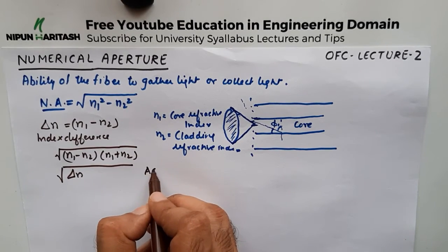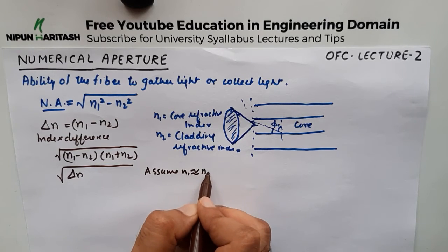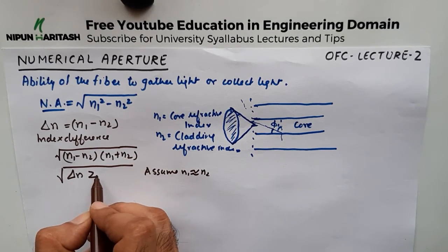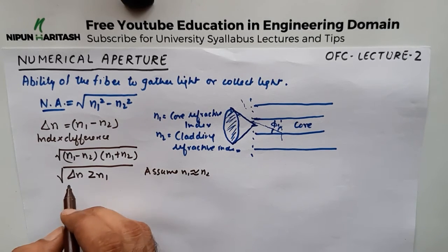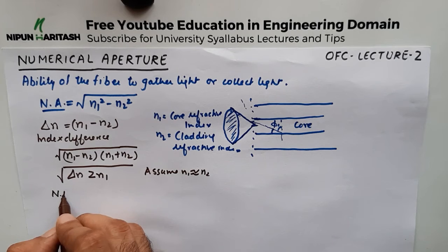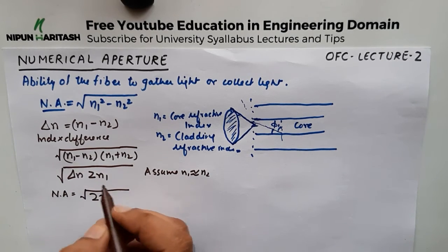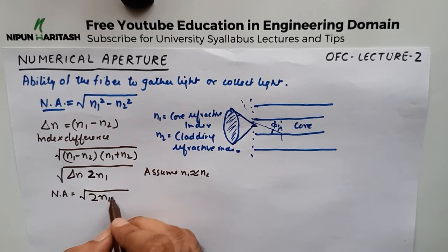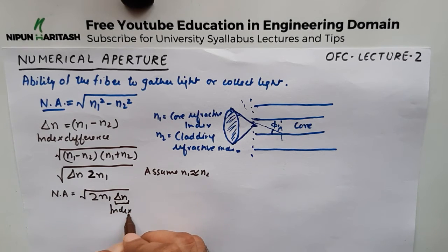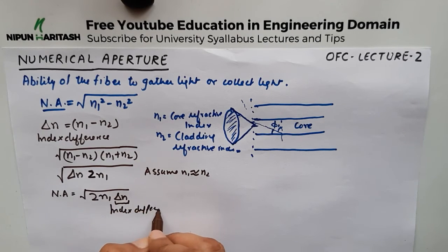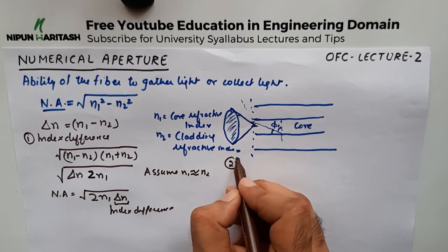You can assume n1 to be approximately equivalent to n2 since there is not much of a difference, so (n1 plus n2) can be taken as 2·n1. Therefore, another formula you can remember for numerical aperture is: the square root of 2·n1·Δn, where Δn is the index difference. This is case number one.